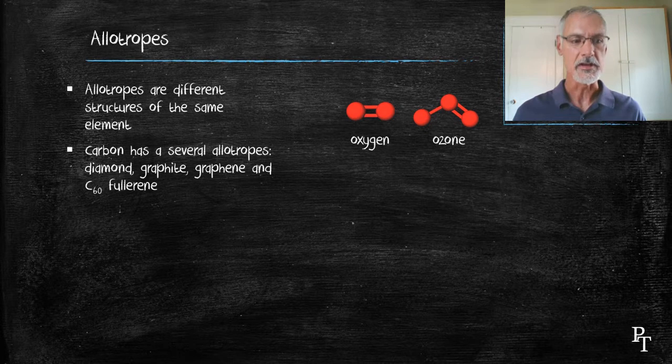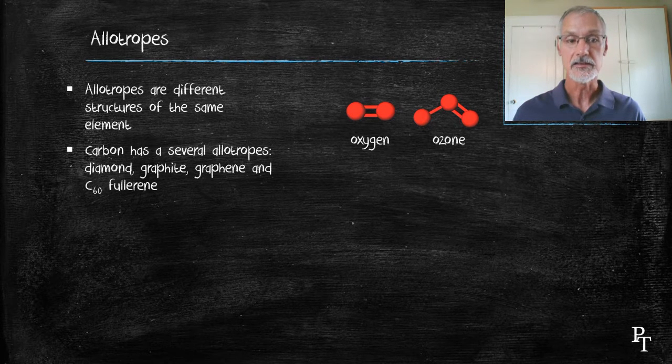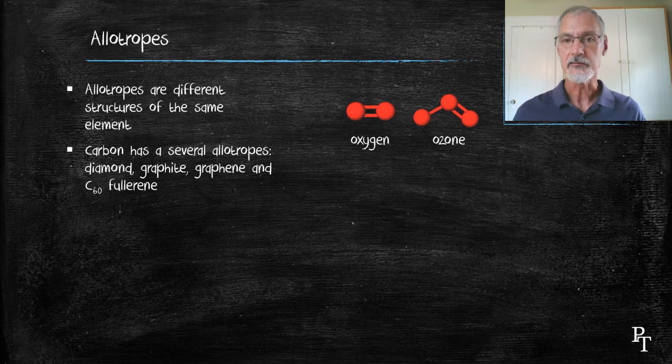Carbon also exhibits this property and has several different allotropes. In this program we're going to look at diamond, graphite, graphene, and C60 fullerene.